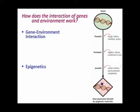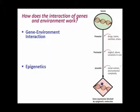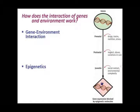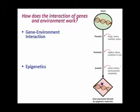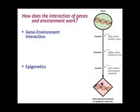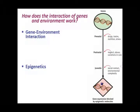Here's an example. We've got genes at the top, and then there are prenatal factors — things that mom might be exposed to that can influence the developing fetus, like drugs, toxins, maternal nutrition, and maternal stress. Once the baby's born — postnatal — things that happen when the baby's little include neglect and abuse.